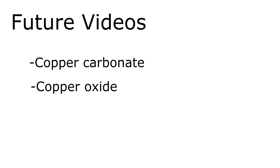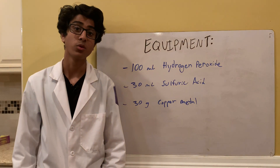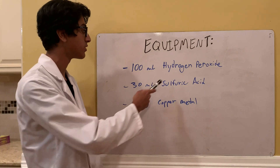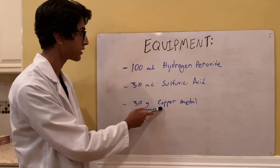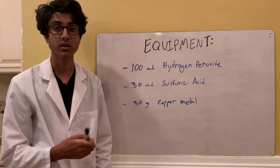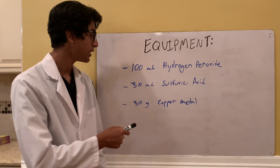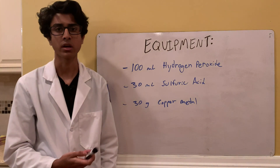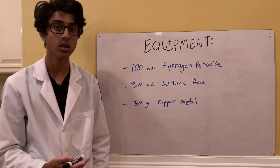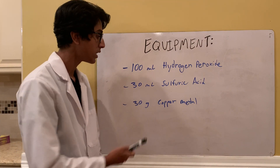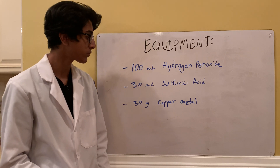Copper sulfate can also be used to make copper carbonate, copper oxide, and copper salicylate. The equipment for this experiment includes three reactants: hydrogen peroxide, sulfuric acid, and copper metal. We're going to need 100 milliliters of 30% hydrogen peroxide, 30 milliliters of sulfuric acid — I'm using drain opener which is around 97–98% sulfuric acid — and 30 grams of copper metal, using copper wire.